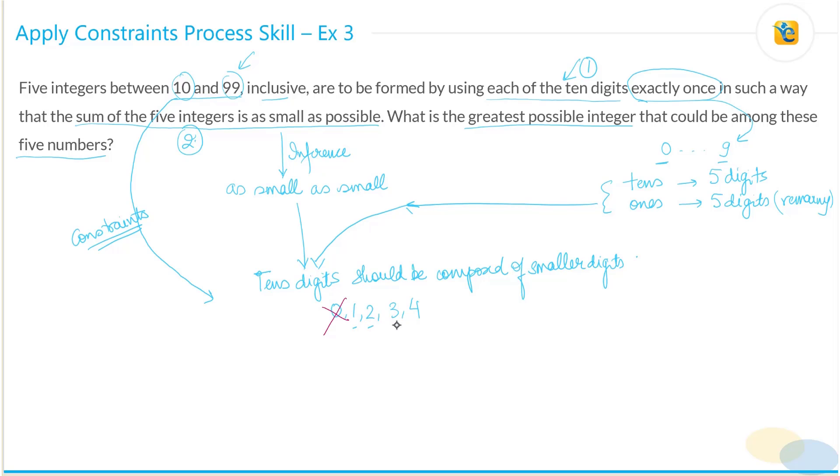So with that information, what do we have? Our tens place can have one, two, three, four or five, which means our ones place or units place will have six, seven, eight, nine or zero.